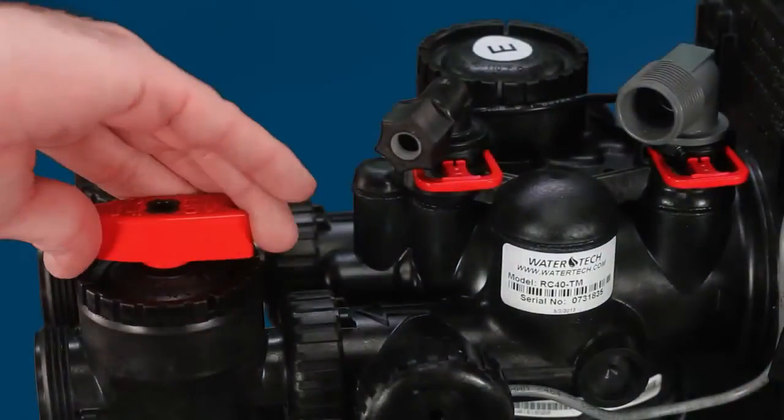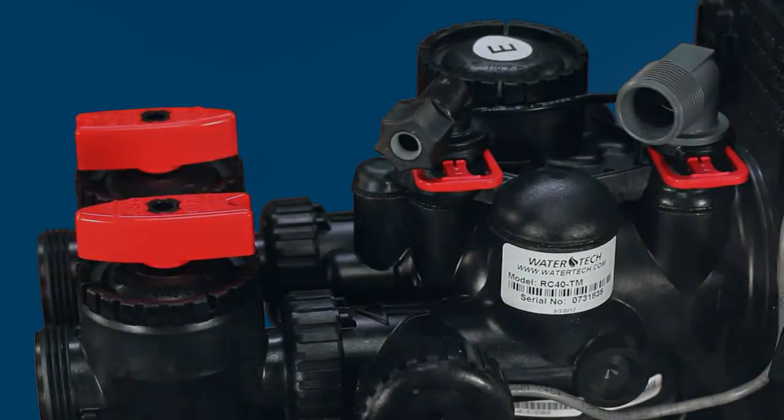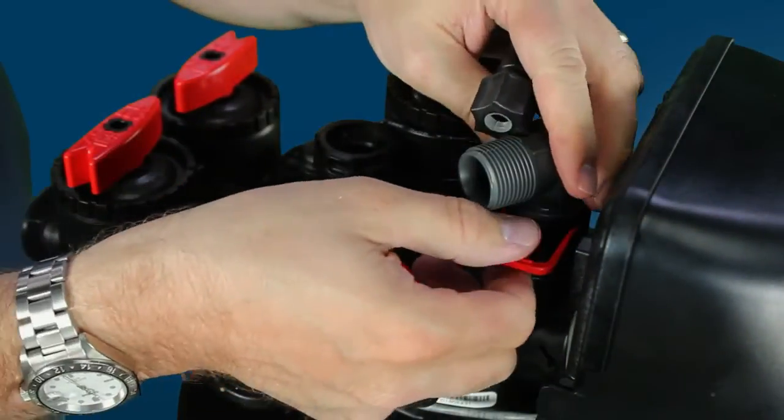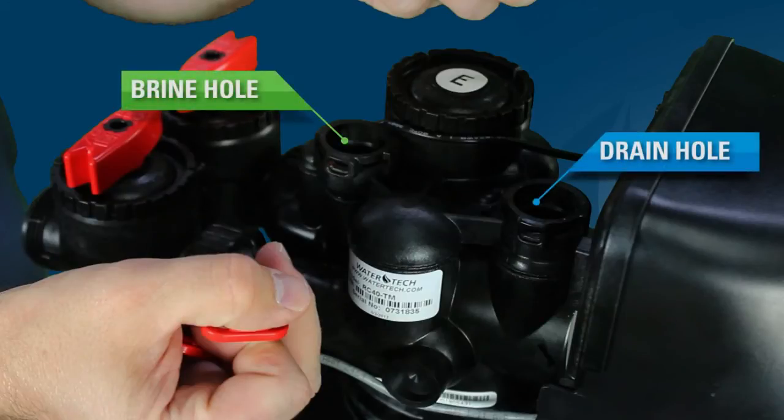In order to determine whether this is the case, you should make sure the system is in service and not in regeneration with water flowing through the valve. Next, pull the brine elbow and drain elbow from the valve and look to see if there is any water movement in either the valve brine hole or drain hole by looking down into them for 15 to 20 seconds.